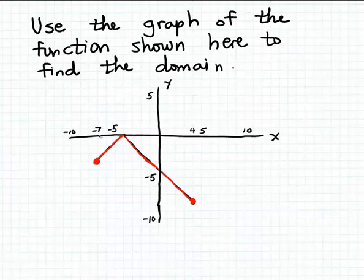So the domain of this function is going to be numbers from minus 7 to 4. And both of these boundary values, minus 7 on the left and 4 on the right, are going to be included in the domain.